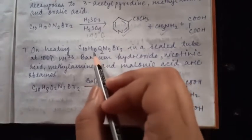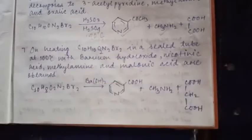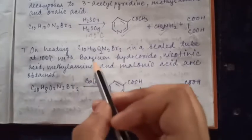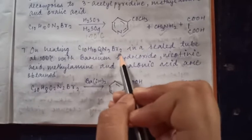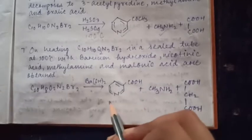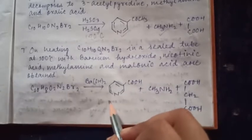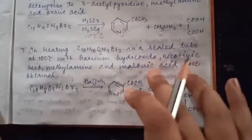Again it is seen that when we treat nicotine with bromine and sulfurous acid, then another important compound forms. That compound is C10H10O2N2Br2. When we react this in sealed tube with BaO2, then it forms nicotinic acid which is pyridine-3-carboxylic acid, methylamine, and malonic acid. So these three reactions number five, number six and number seven, we can also justify them.